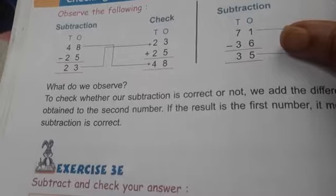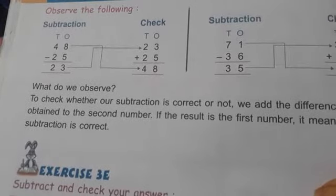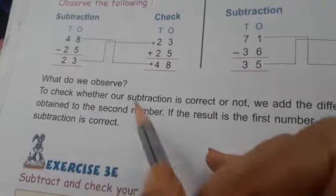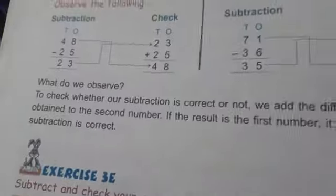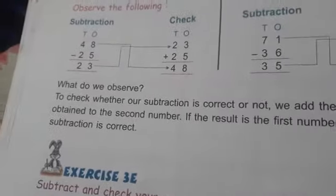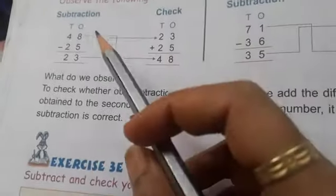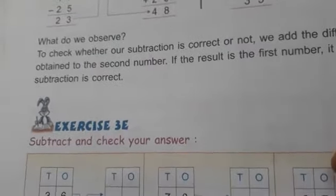Now we check whether our subtraction is correct or not. We add the difference obtained to the second number. So 25 plus 27 — if the result equals the first number, then the subtraction is correct. By adding both numbers, if the result equals the first number, the subtraction is correct.